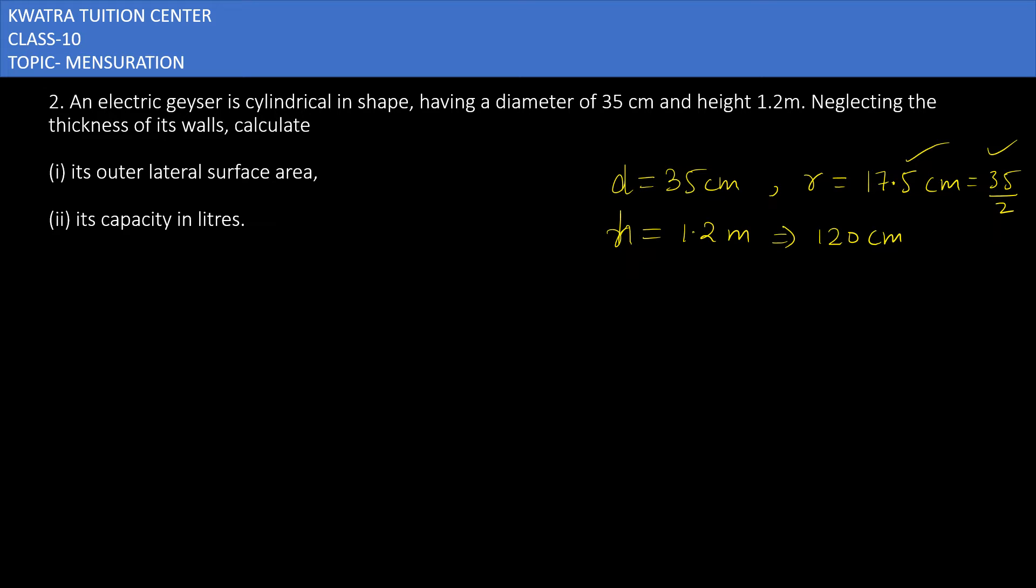Now you have to find the outer lateral surface area. Lateral surface area for cylinder will be 2πrh. Then 2 will be as it is, π is 22 by 7 because it is not mentioned here. R's value is 35 by 2, and h is 120.